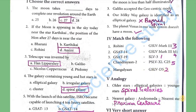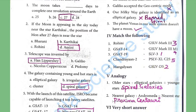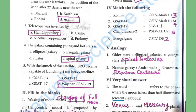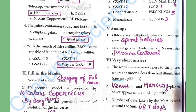Analogy: Oldest stars — elliptical galaxies; younger stars — spiral galaxies. Nearest galaxy — Andromeda; nearest star — Proxima Centauri.